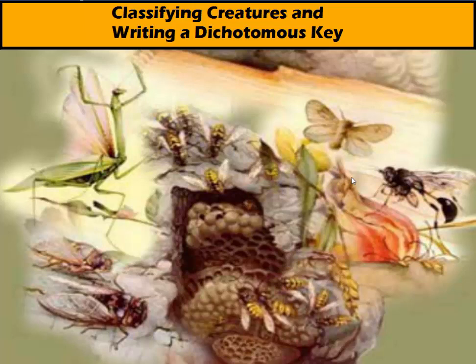Hi there everybody, welcome to our vodcast on classifying creatures and writing a dichotomous key. What we're going to do today is talk about how we can identify or sort or single out organisms based on characteristics that you can see on their bodies. Then we'll write a sequence of statements to show you how to sort them out, known as a dichotomous key. So why don't we get started?